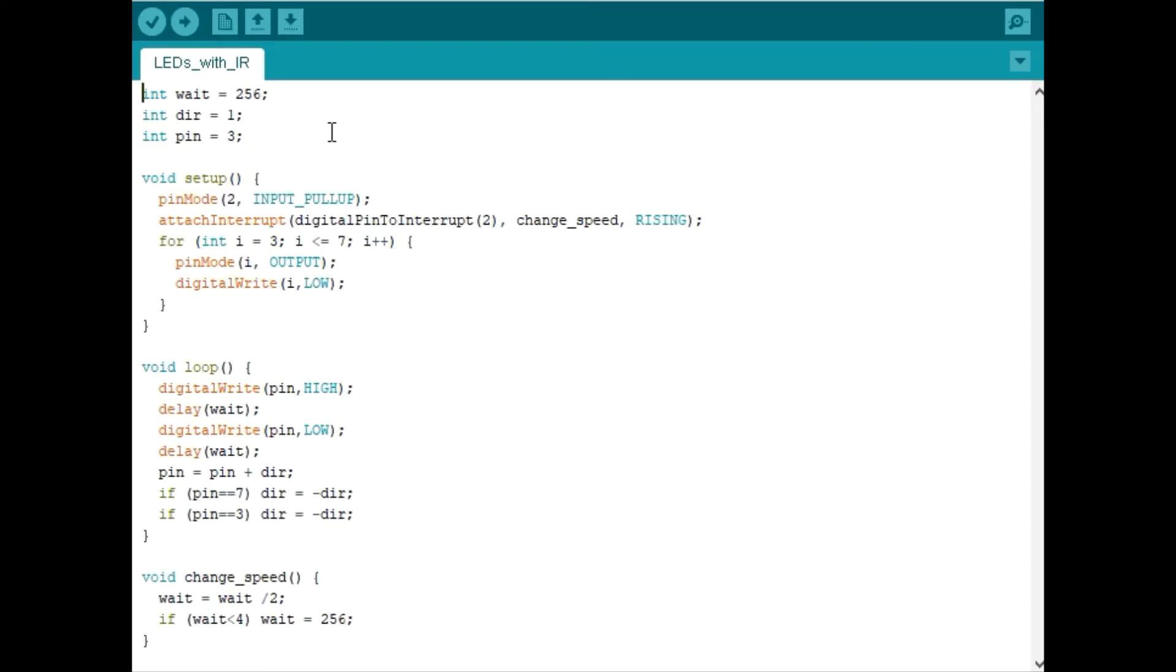First of all we have a few integers that we will initialize, and this is a wait time in milliseconds. I picked the number 256 because it can be divided by two multiple times. This direction variable will come into play later and we're going to be using pins 3 through 7 on the Arduino. Our starting pin will be number 3.